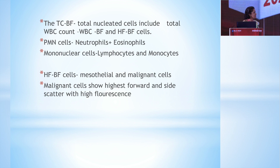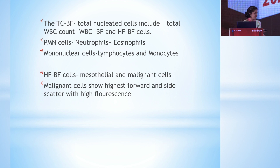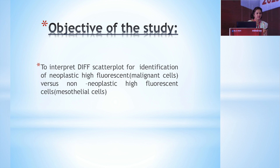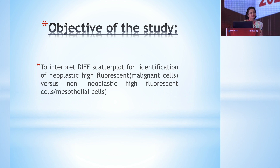Malignant cells show the highest forward and side scatter with high fluorescence and should be easily identifiable in the diff scatter plot. The objective of the study is to interpret this diff scatter plot for identification of neoplastic high fluorescent cells — malignant cells — versus non-neoplastic high fluorescent cells, which could be mesothelial cells or macrophages.